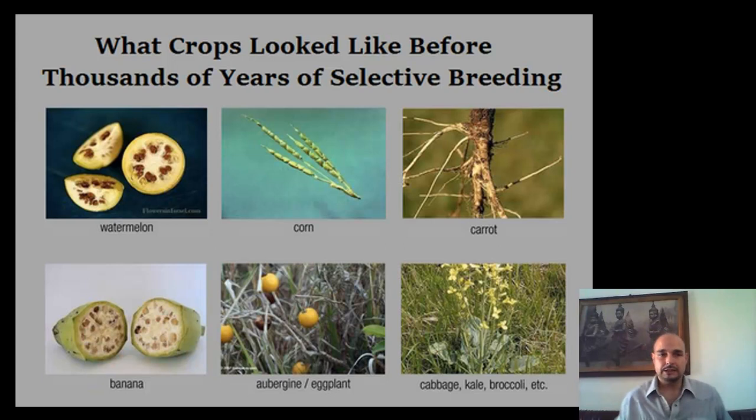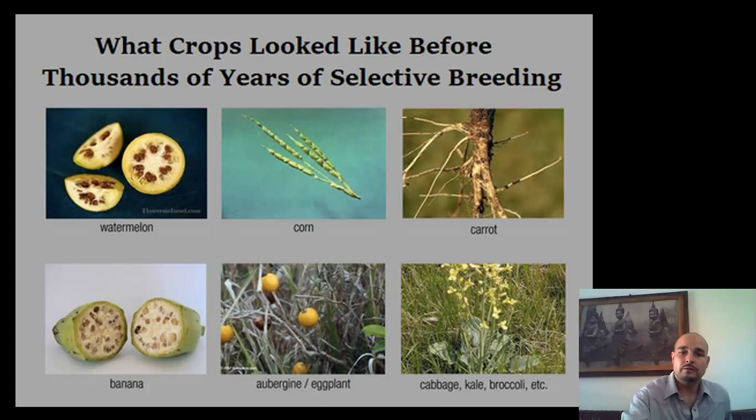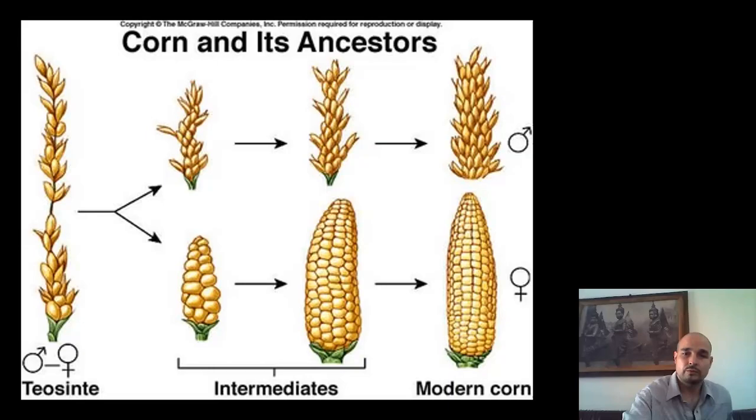Now we're going to take a look at some plants. We're talking about thousands of years of selective breeding. You can see pictures of watermelon, carrot, corn, banana, yellow mustard, and eggplant. Either different features were selected for — like fruit size, leaves, stems, or roots — and they were bred through many, many generations.